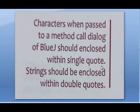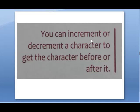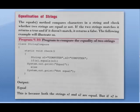The difference between character and string: when passed to a dialog method in BlueJ, characters are shown enclosed in single quotes and strings are enclosed in double quotes. When writing a program using a function and providing values at execution time, character constants must be written between single quotes. You can also increment or decrement a character to get the character before or after it.